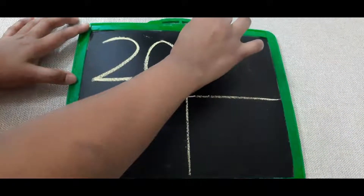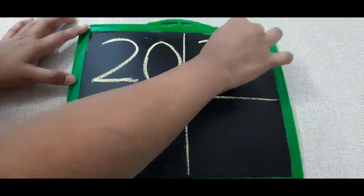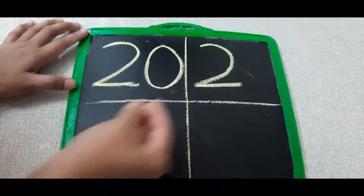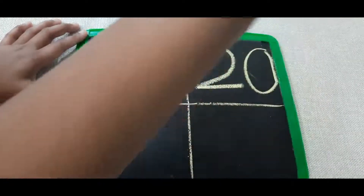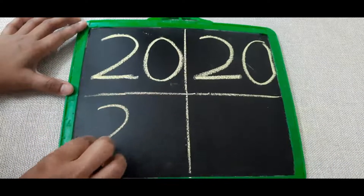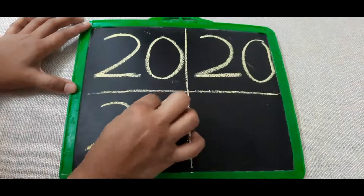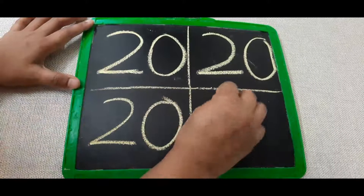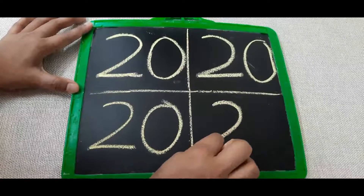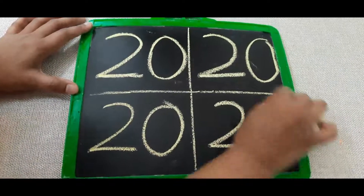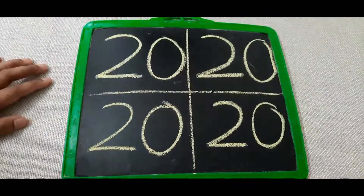Once again: first write 2 — left open curve and a sleeping line — then 0. 2, 0 — 20! Once more: write 2, then 0. 2, 0 — 20! So children, we have learned how to write number 20.